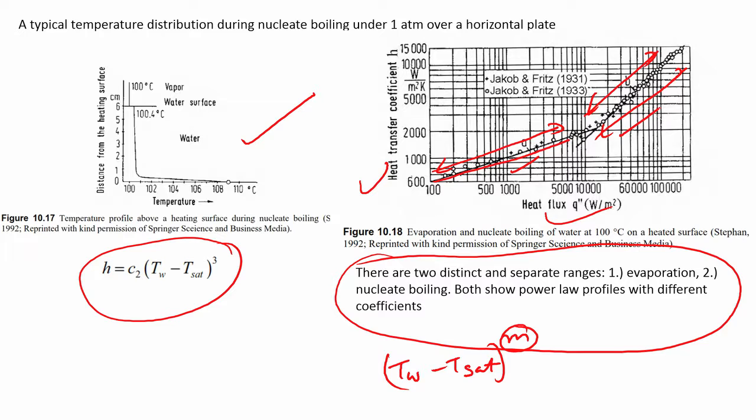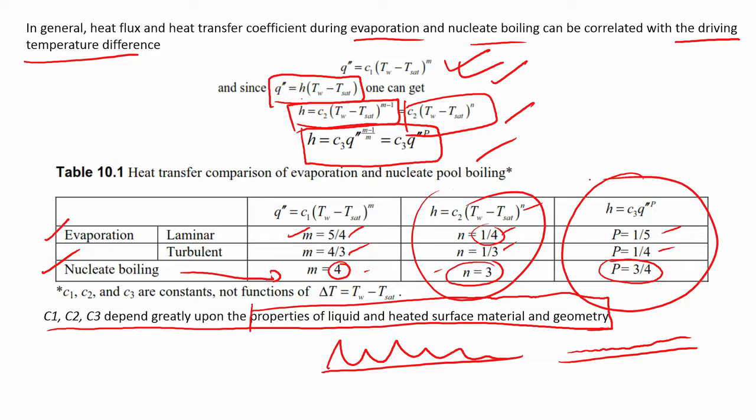The constants C1, C2, C3 depend greatly on fluid properties, heated surface material, and geometry — for example, surfaces with many micro-cavities will have different coefficients. Typical temperature profiles for nucleate boiling on a horizontal plate show a clear transition from an evaporation regime to a nucleate boiling regime, with the nucleate boiling exponent being much higher than the evaporation exponent.